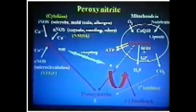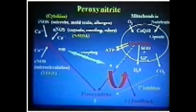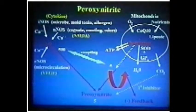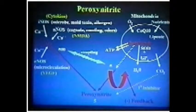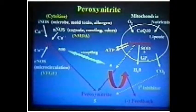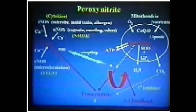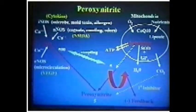INOS stands for inducible. It's turned on by cytokines in the presence of microbes, mold toxins, and allergens — so microbes, mold toxins, and allergens trigger INOS. You might ask which one of those triggers the most INOS. Actually, just allergies produce the most INOS activation, probably more than mold toxins or viruses.